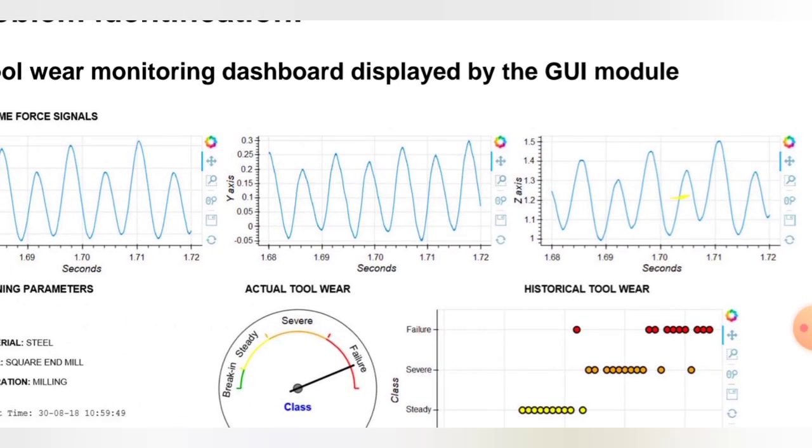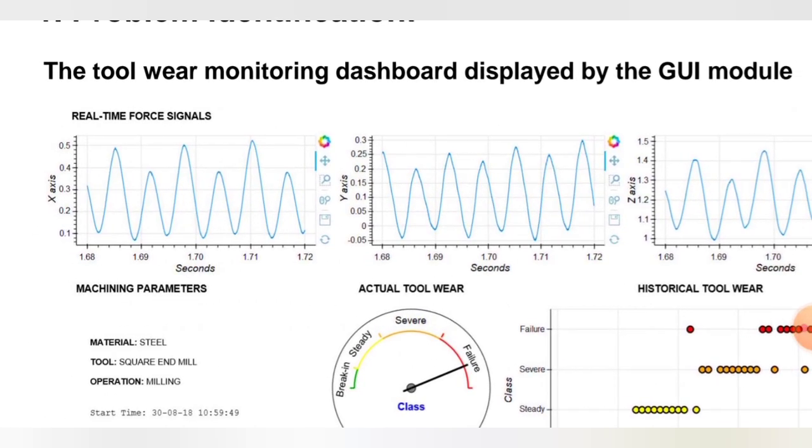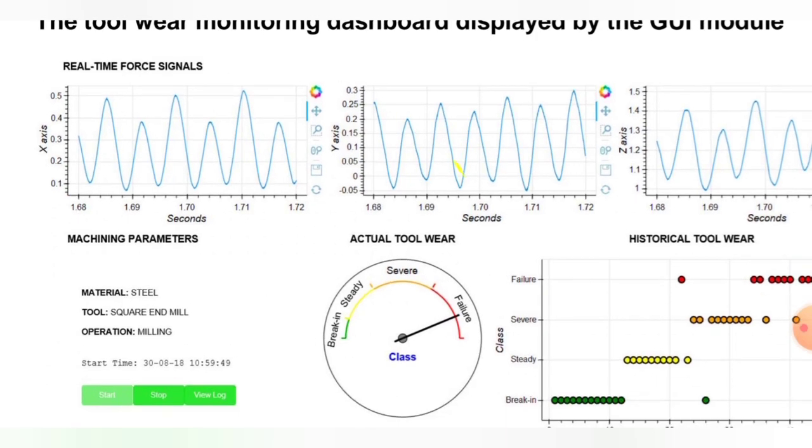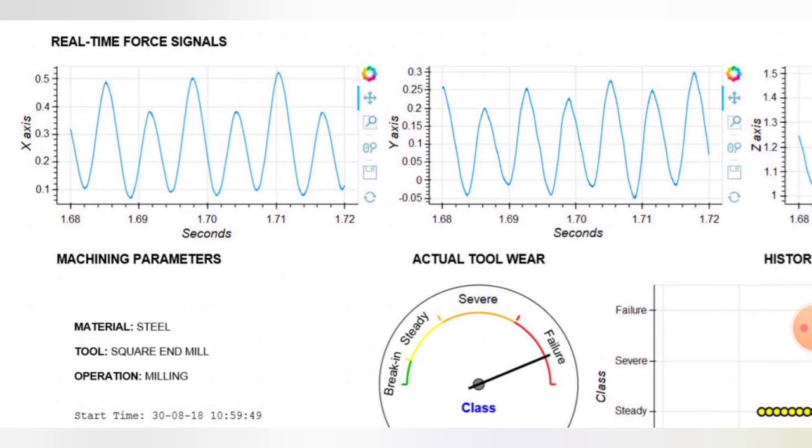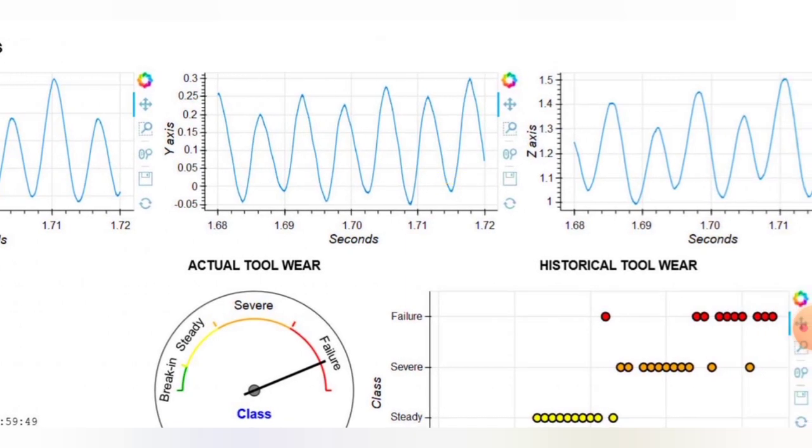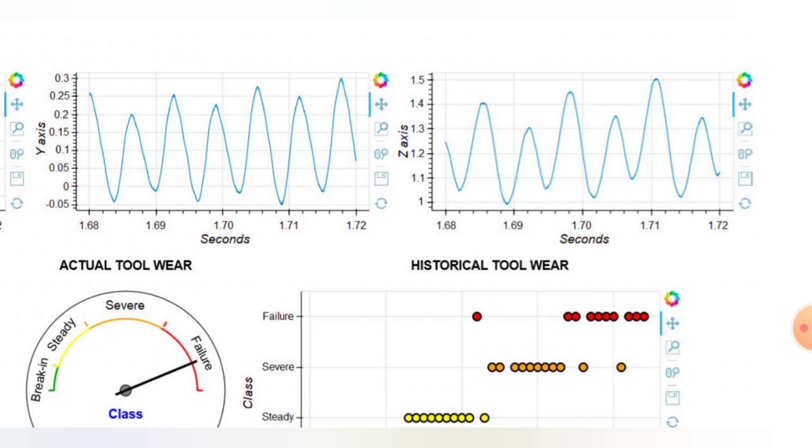X-axis, Y-axis, and Z-axis. As we know, the tool starts wearing from X, Y, Z axes and these are the wearing cycles of that tool for the particular instance. For the X-axis, 0.1 to 0.5 is in displacement and 1.68 to 1.7 in seconds related to that tool varying. Similarly, for Y-axis, minus 0.05 to plus 0.03, and it is in seconds 1.68 to 1.72. And for Z-axis, 1 to 1.5. All these are in X, Y, Z axes.